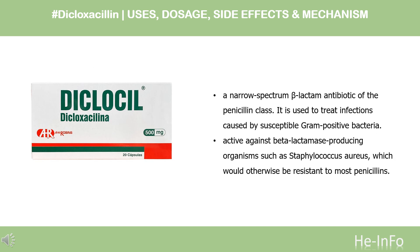What is dicloxacillin? Dicloxacillin is a narrow-spectrum beta-lactam antibiotic of the penicillin class. It is used to treat infections caused by susceptible gram-positive bacteria. It is active against beta-lactamase-producing organisms such as Staphylococcus aureus, which would otherwise be resistant to most penicillins. It was patented in 1961 and approved for medical use in 1968, and is available as a generic medication.